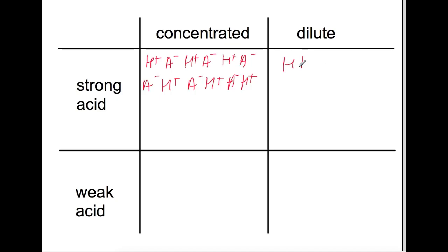For a weak acid, if it's concentrated, we're going to have a few of these split up, but we're still going to have lots of molecules. And you can see we've got lots of things in solution but not very many split up. If we have a dilute weak acid, we don't have many of either.